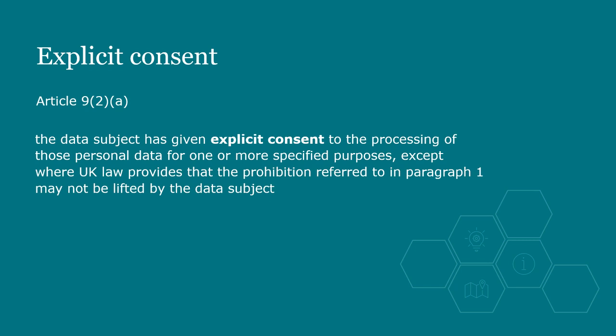The first condition in Article 9 is A, explicit consent. Explicit consent is not defined, but is not very different from the usual high standard of consent, so it must be freely given and involve a specific, informed and unambiguous indication of the individual's wishes. The key difference is that explicit consent must be affirmed in a clear, expressed statement of consent. This can be oral or written.